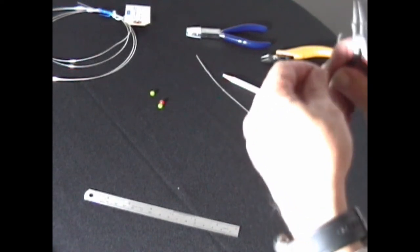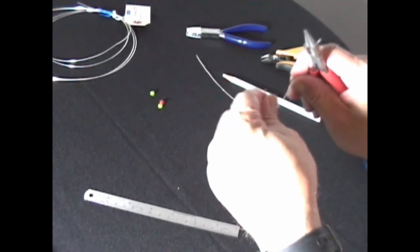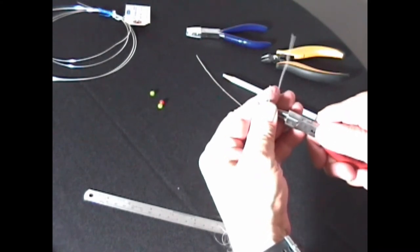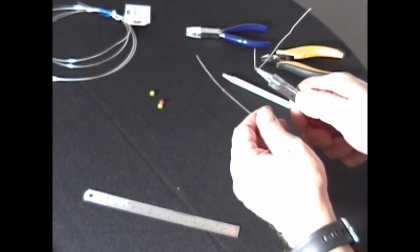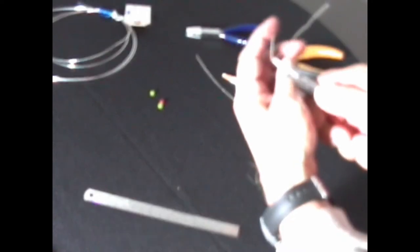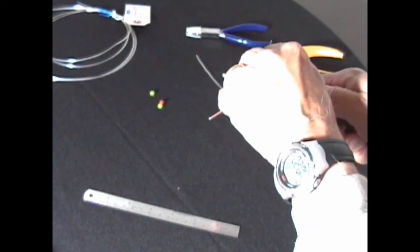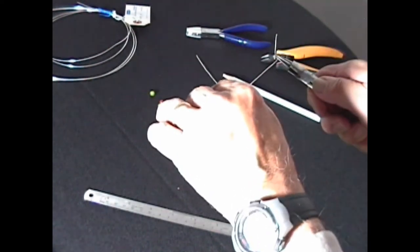At that point, turn it around, grab it from the other side, and then bend the wire 180 degrees at this point.